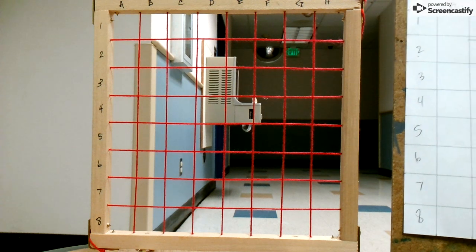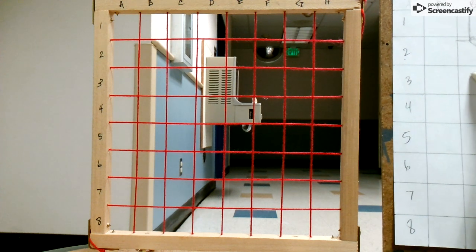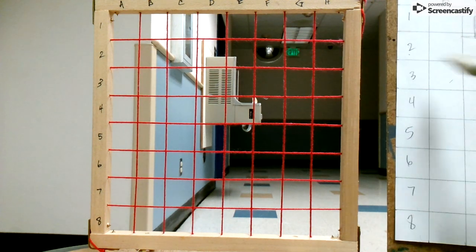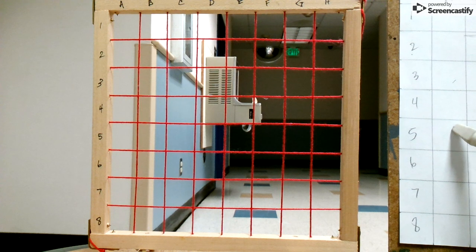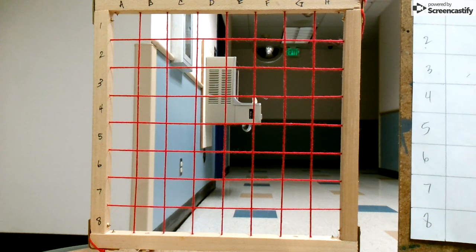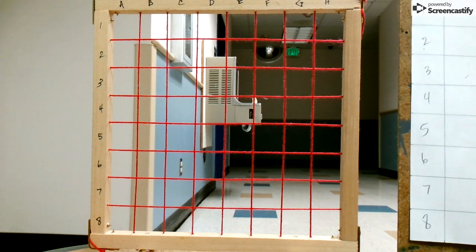If I wanted to do more of an enlargement, I would make my grid here larger—instead of one inch by one inch, I would go maybe two inches by two inches if I wanted to draw it much bigger than four or five inches.